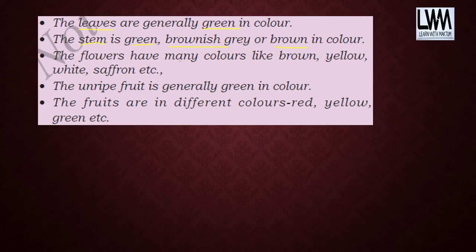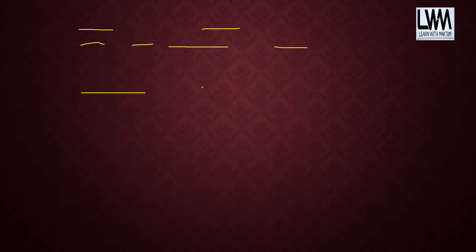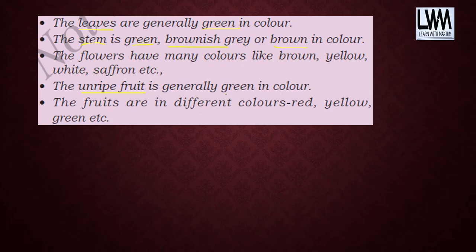Flowers have many colors like brown, yellow, white, saffron, etc., depending on the type of plant. Unripened fruits — those not yet completely ripe — are generally green in color. The ripe fruits that you eat can be red, yellow, green, or other colors.